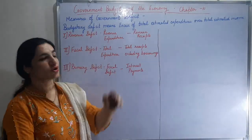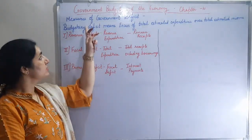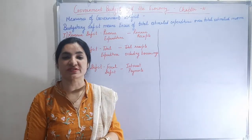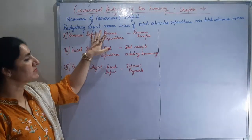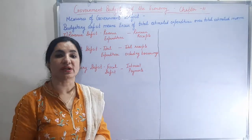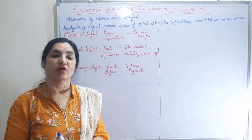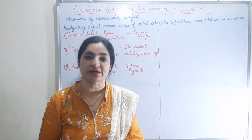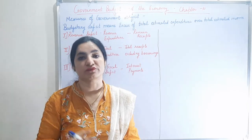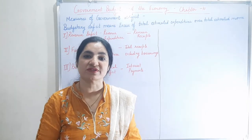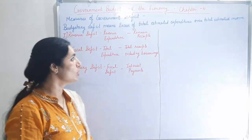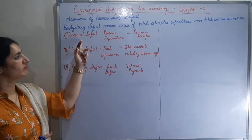Next heading is measures of government deficit. Here we are going to study the various types of deficits under budgetary deficit. Budgetary deficit means excess of total estimated expenditure over total estimated revenue — the expenditure is more than the revenue, which is why it is called a deficit. It can be of three categories: revenue deficit, fiscal deficit, and primary deficit.